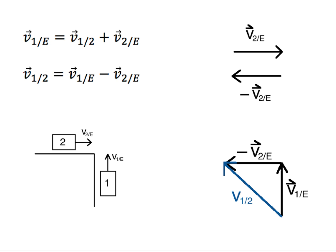Using the analogy: car one is like the ball, car two is like the train, and the earth is like the ground. Making the substitutions — 1 for B, 2 for T, E for G — gives the equation: V_1E equals V_12 plus V_2E, where V_1E is the velocity of car one relative to the earth, V_12 is the velocity of car one relative to car two, and V_2E is the velocity of car two relative to the earth. What we're looking for is V_12.